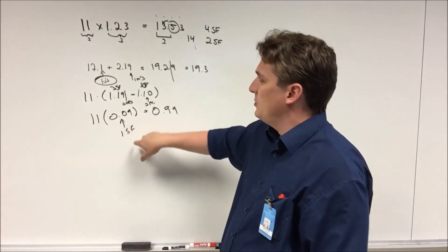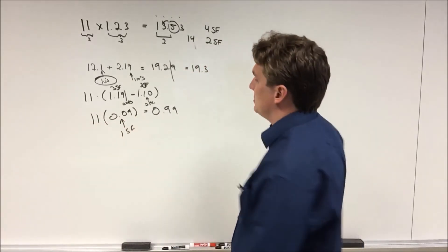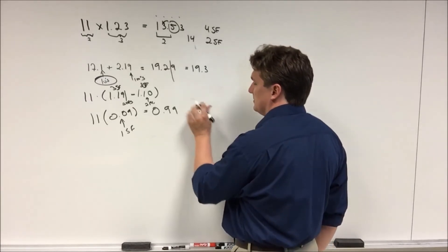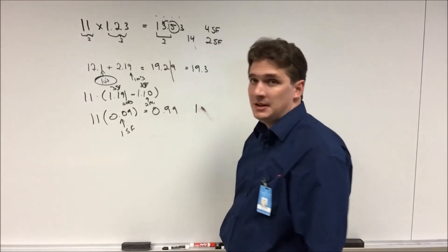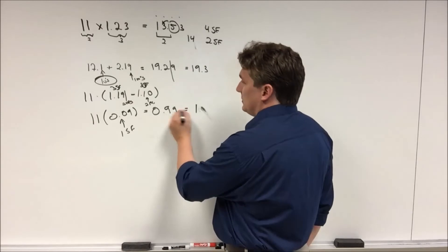So when we multiply the 11 times the 0.09 this would tell us that we're limited to one sig fig. So our final answer should be one point, or it should just be one. You shouldn't have anything but one.